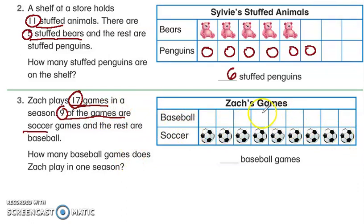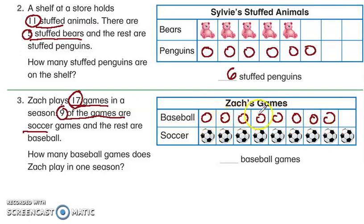I count on from nine: nine, ten, eleven, twelve, thirteen, fourteen, fifteen, sixteen, seventeen. Now let's see how many baseball games we had: one, two, three, four, five, six, seven, eight baseball games. I hope this video was helpful!